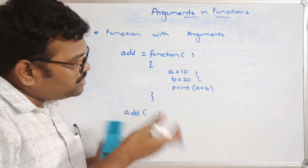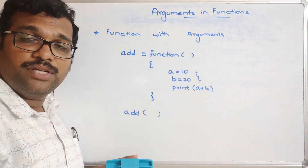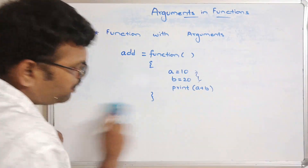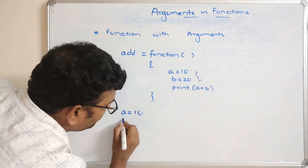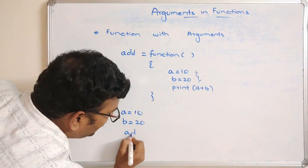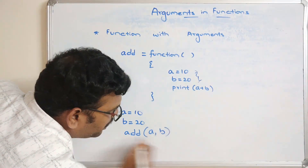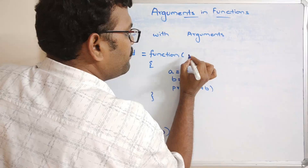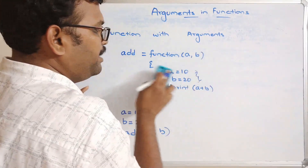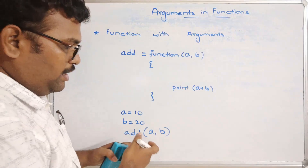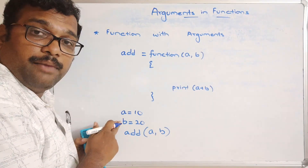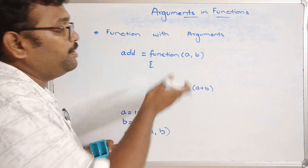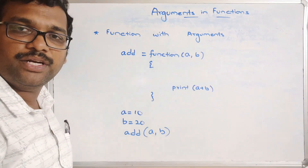The next category is function with arguments. Here we can pass inputs from the function call to the function definition. Outside the function definition, we can read values and pass multiple arguments. We declare a = 10 and b = 20 and pass these arguments in the function call. These values will be reflected in the function definition where a + b is computed.